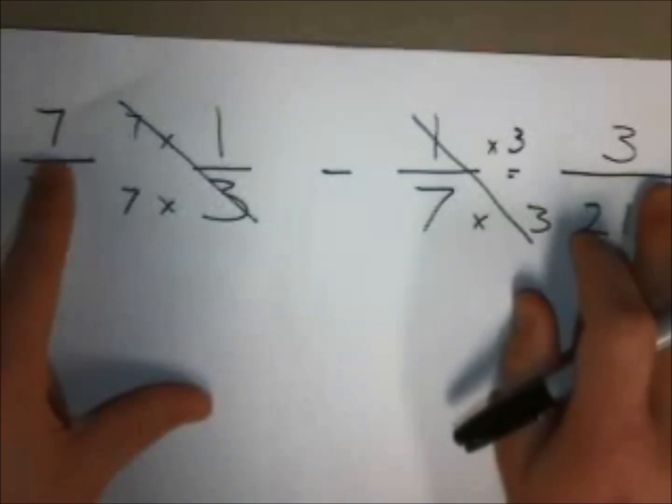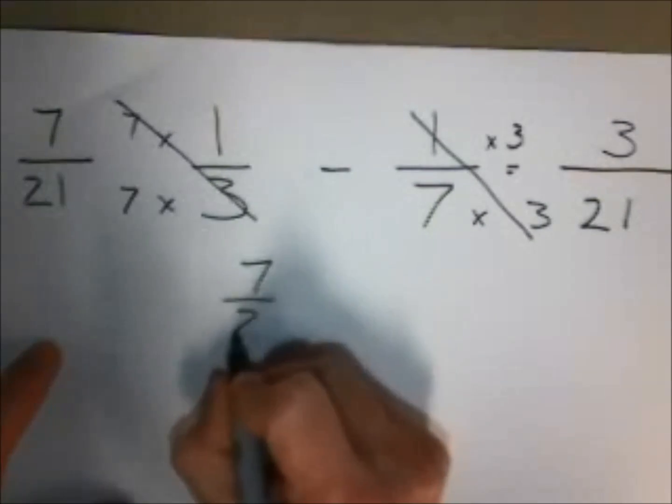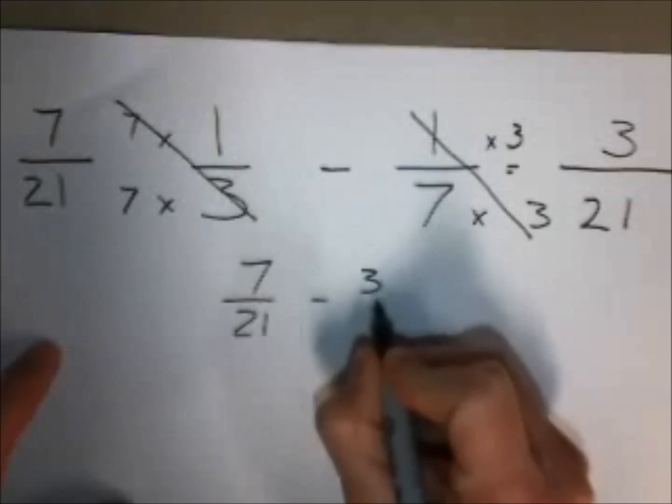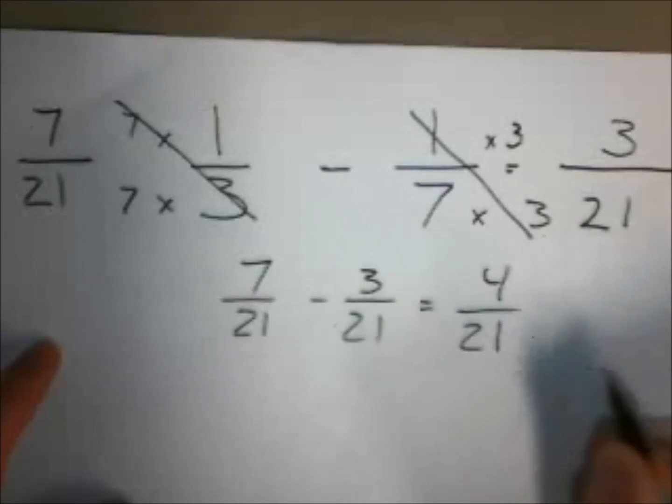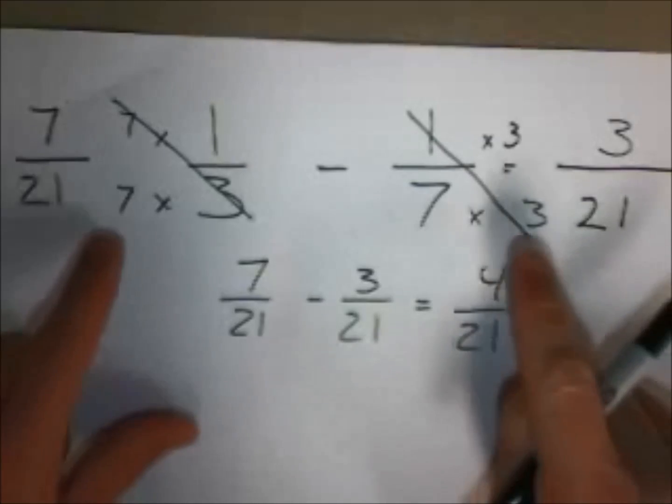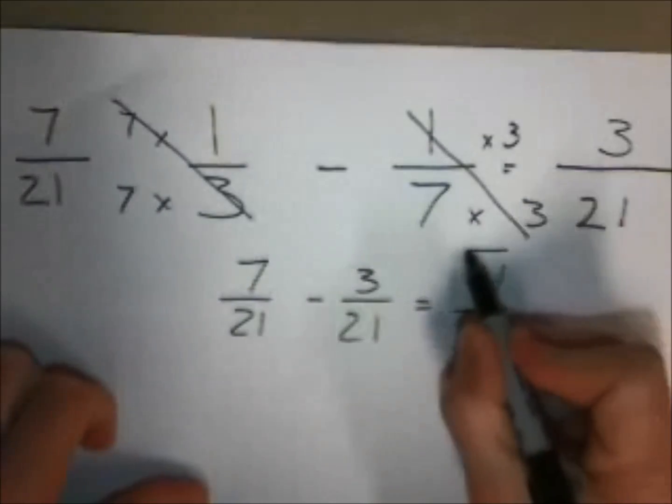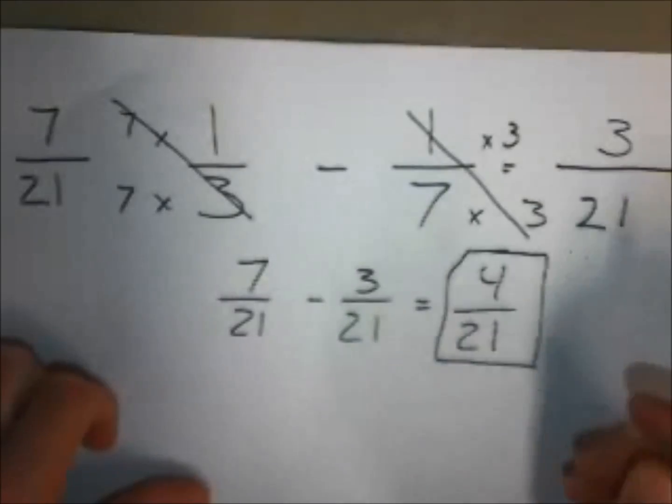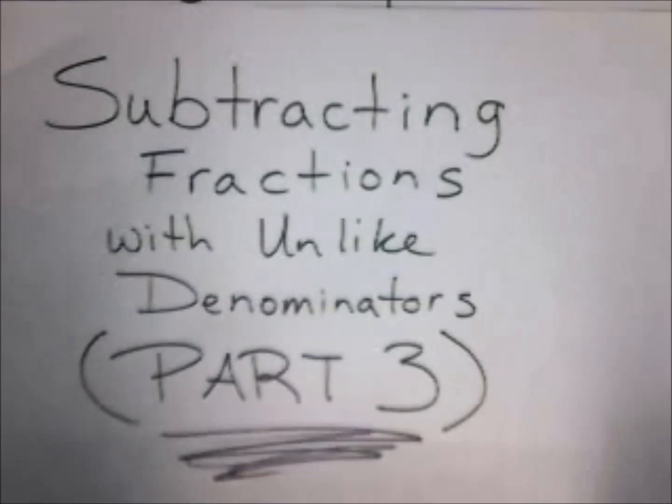We can subtract 7 and 3 because we have common denominators. We know that 7/21 take away 3/21 is going to give us 4/21 for a final answer. Once again, we found that answer by using what I call crisscross multiplication. This is our final answer. Hooray! All right everyone, it is time for part three.